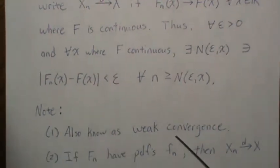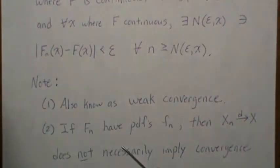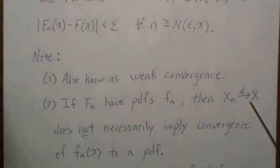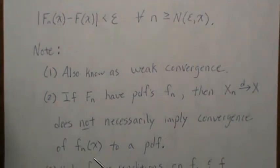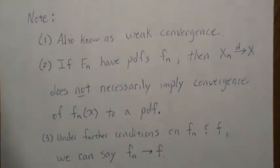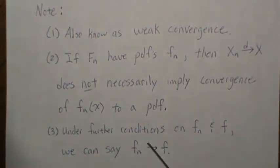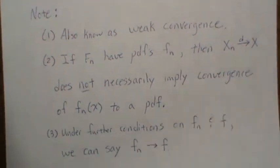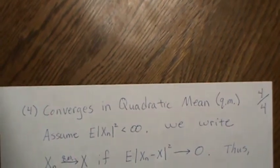This is also known as weak convergence. Here's a subtlety: if F_n have PDFs f_n and X_n converges in distribution to X, this does not necessarily imply that the PDFs f_n converge to any PDF. We'll give an example of that in the fourth video. Although there are some conditions you can assume on these PDFs that would ensure they converge if there's convergence in distribution, in general that's not the case.